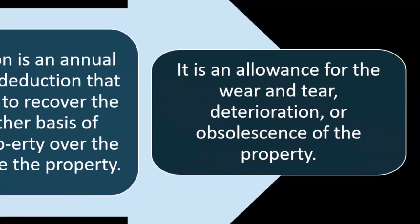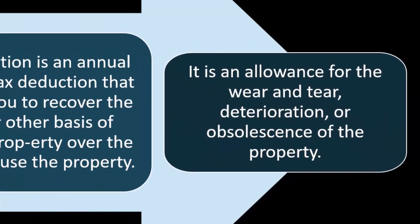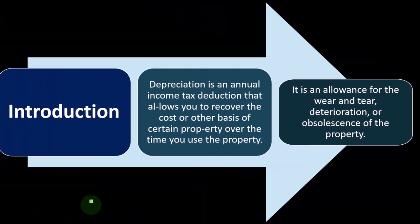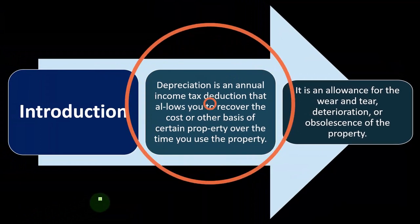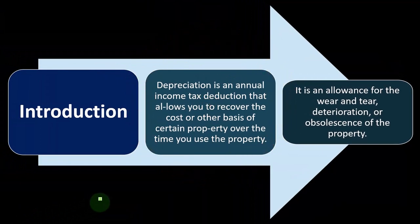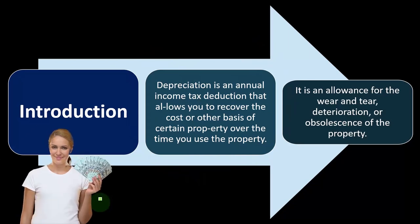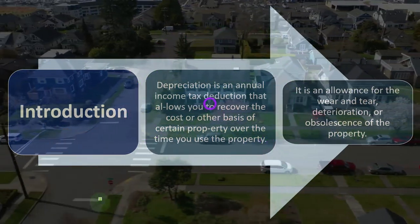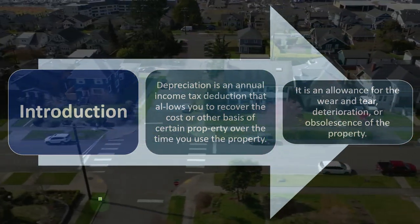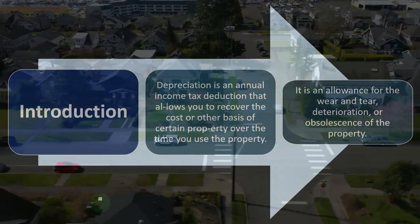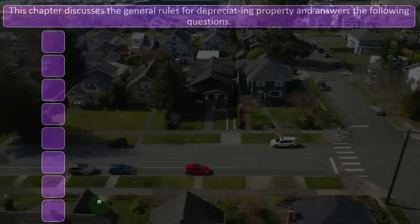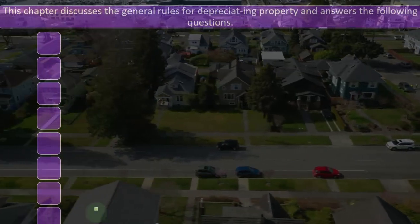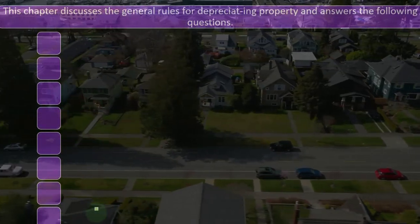The exception is usually real estate, because although you still have to keep it up — at least the building part, as opposed to the land part — it could go up in value for other reasons. Real estate is the oddball. Most other pieces of equipment, you expect them to go down in value over time, and therefore you allocate the cost as you consume those items to help generate revenue. That's the concept of depreciation.